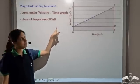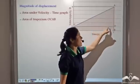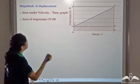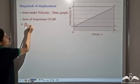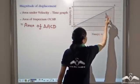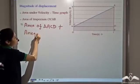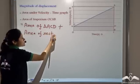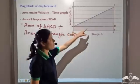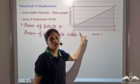We can divide the trapezium into two parts: one is a rectangle and the other is a triangle. We calculate the area for each part and then add them. So this area is equal to the area of triangle ACD plus the area of rectangle COBD. The area of a triangle is equal to half into base into altitude. So area of triangle ACD is half into CD into AD. And area of the rectangle is the product of its two sides, BD into OB.